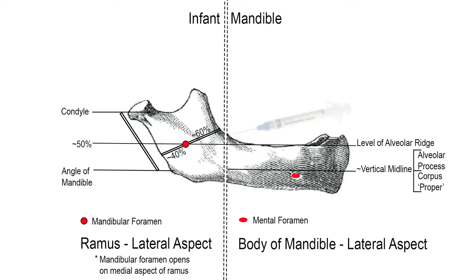The needle is inserted between the pterygomandibular ligament and the ascending border of the mandible, as it is in all ages; however, it will have to be given at the level of the alveolar ridge up until six years of age.